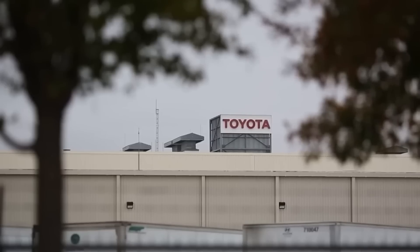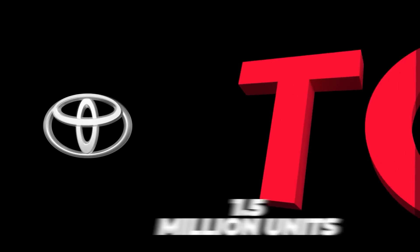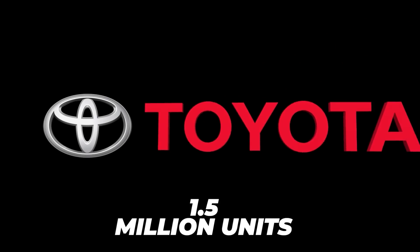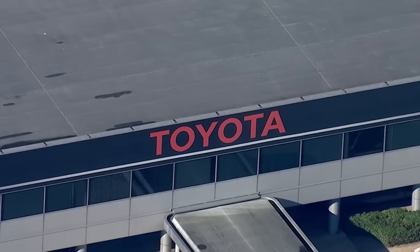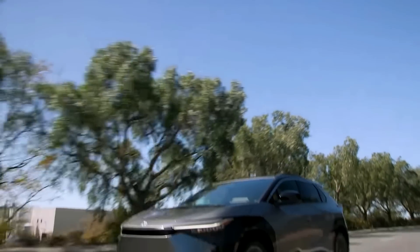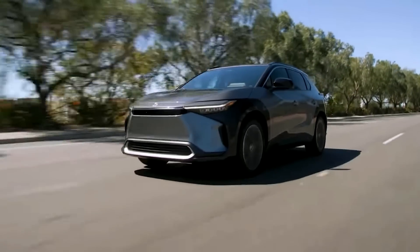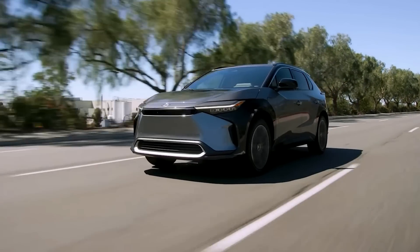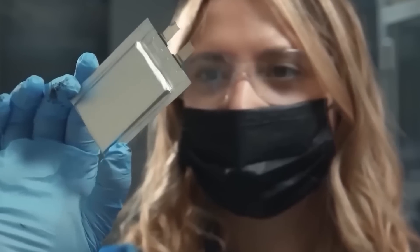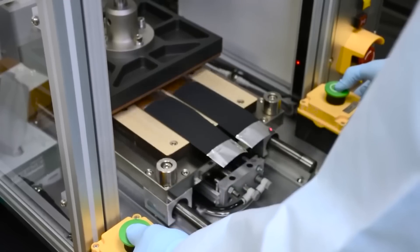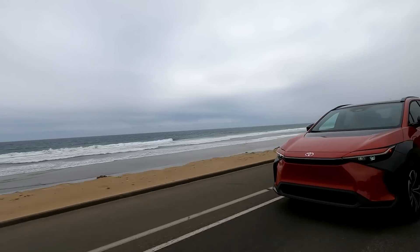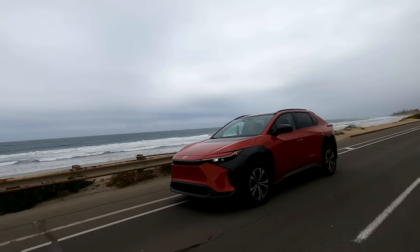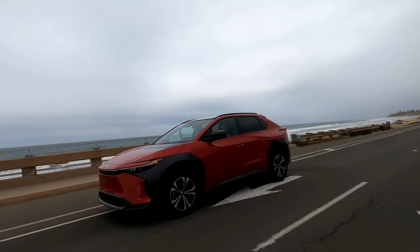Despite selling only around 20,000 EVs globally last year, Toyota aims to increase its annual sales to 1.5 million units by 2026 and then double that number by 2030. These targets demonstrate Toyota's determination to accelerate its presence in the EV sector. And if the company successfully develops a cost-effective manufacturing process for these batteries, it has the potential to become one of the leading electric vehicle manufacturers heading into the 2030s.